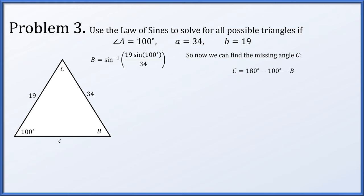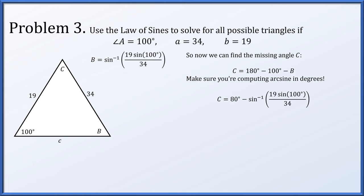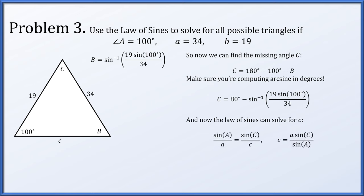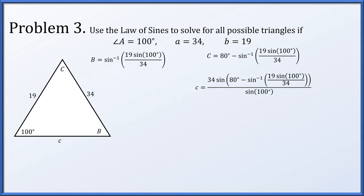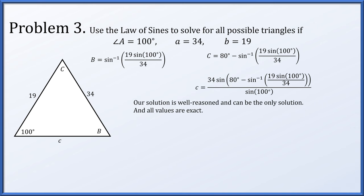So angle B has to be exactly arcsine of 19 sine of 100 degrees over 34. Now we can find the missing angle C: it's 180 degrees minus 100 degrees minus angle B, which is 80 minus the arcsine of 19 times sine of 100 degrees divided by 34 — computing that arcsine in degrees. The law of sines then gives us side c: it's little a times sine C divided by sine A. Replacing known values gives us our answer. We've found all angles — A was given, B and C were solved — and we found the missing side length c.